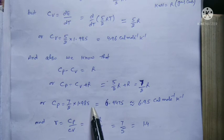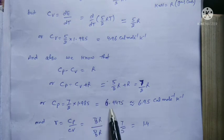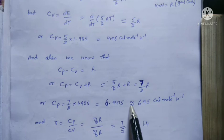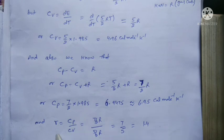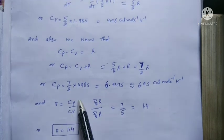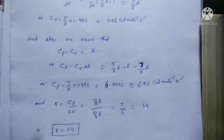So Cp equals (7/2)R. Substituting R = 1.985, we multiply and get 6.9475, which rounds off to 6.95 calories per mole per Kelvin.